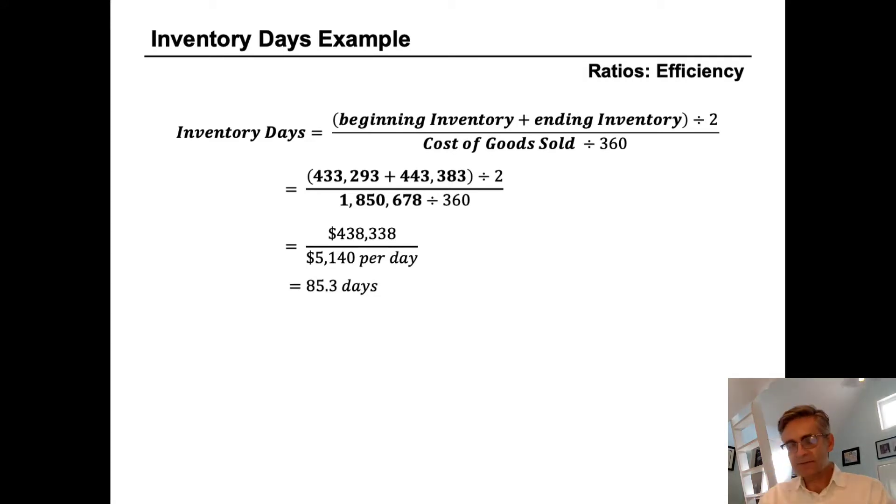So in general, lower inventory days is considered better and more efficient, but the metric depends a great deal on the industry. And even within industries, we can see a wide range of acceptable days of inventory. So it's best to look at this metric as a change over time.